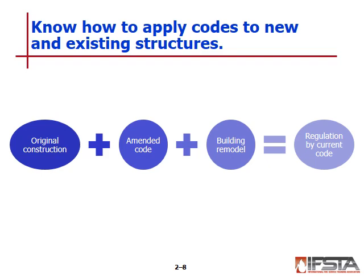Alterations to an existing building or change of use that meets certain criteria may require the entire structure to be brought up to the current building code. For example, an existing high-rise not required to have sprinklers when built may be required to have them installed when renovations affect more than 50% of the building. When there is a change of use, the fire code governing the new use must be enforced. Requirements for existing structures otherwise remain as applied during original construction, unless a retroactivity clause exists in another adopted code.